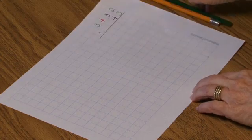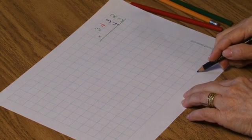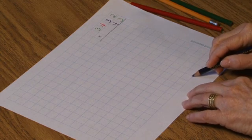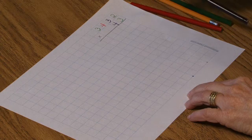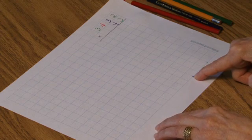The tens place is 3. 1, 2, 3. I'm drawing a dot to show me where the tens place lies on this bottom line.